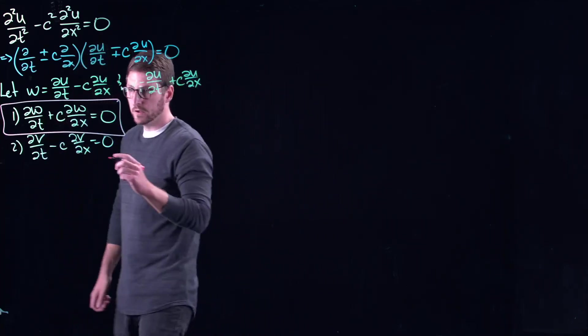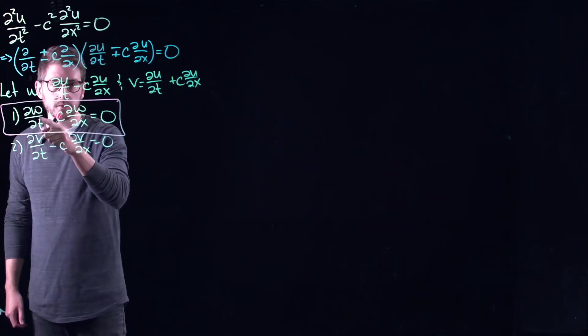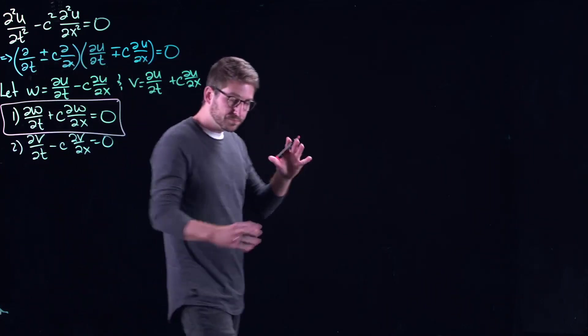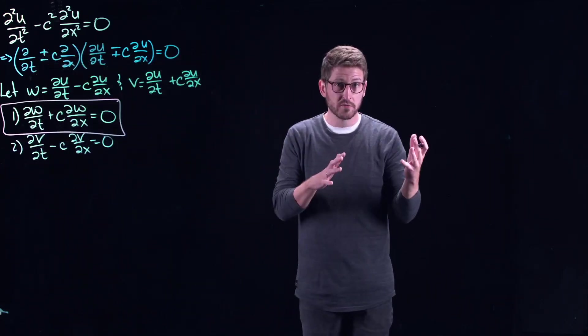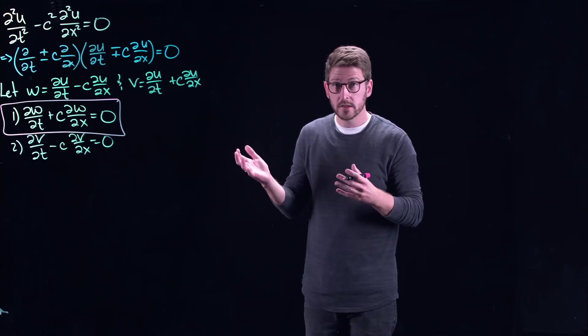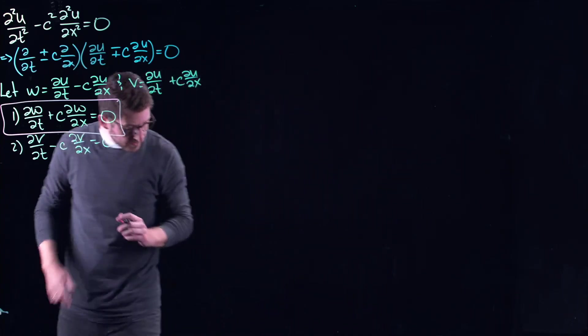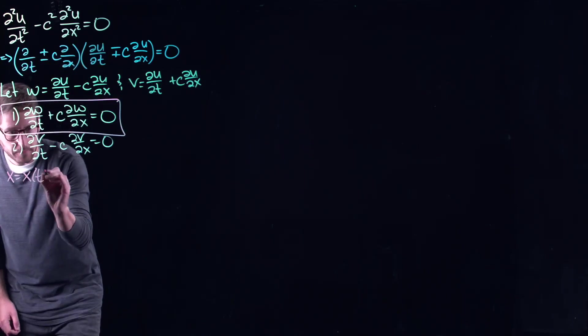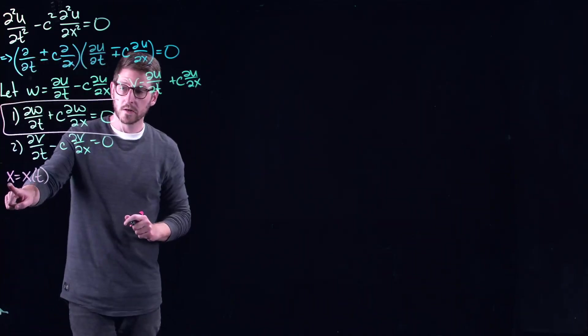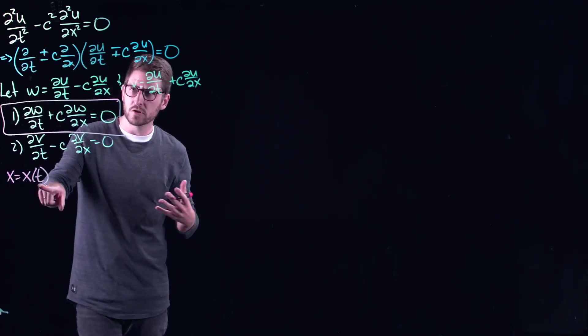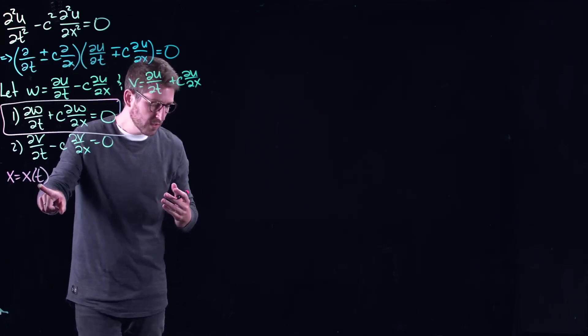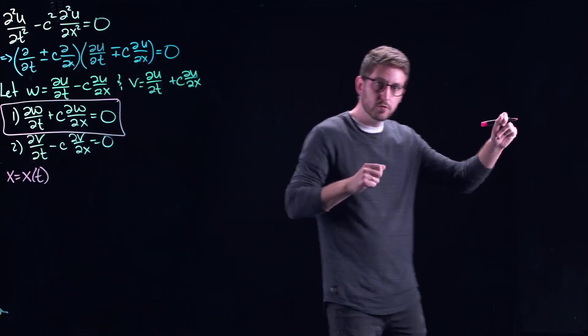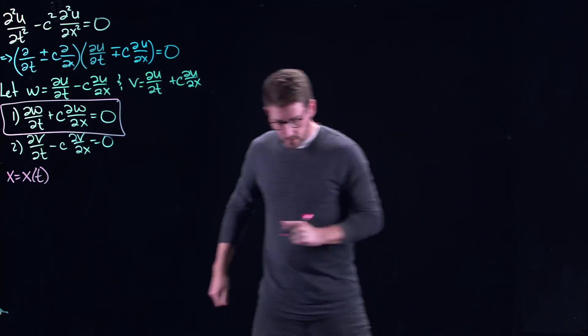So here's what I would like to do. I want to find a solution w in terms of space and time so that this thing equals zero. Now, years of working on these equations has led us to the following method of solving these things. What I'm going to do is track the solution as a moving observer. So let's imagine I'm going to move through space according to some prescribed time. So I'm going to track the solution w of x of t just in time. I'm going to follow it through space as I move on in time.